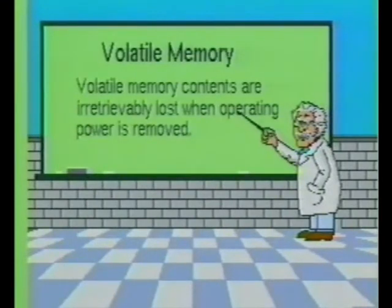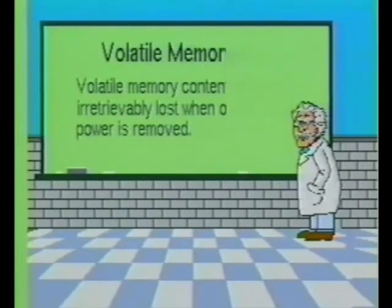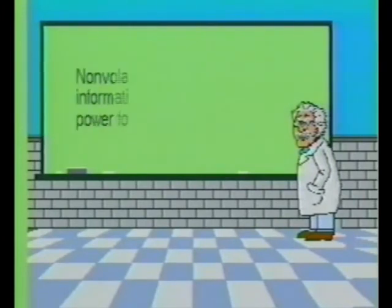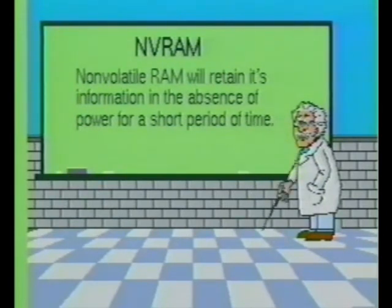Random access memory devices are volatile, since they can only retain data when power is applied. Any loss of power will result in loss of data. Any static RAM device which uses a battery backup system is called a non-volatile or NV RAM device. The NV RAM device will retain its programmable information for short periods of time — days or weeks.